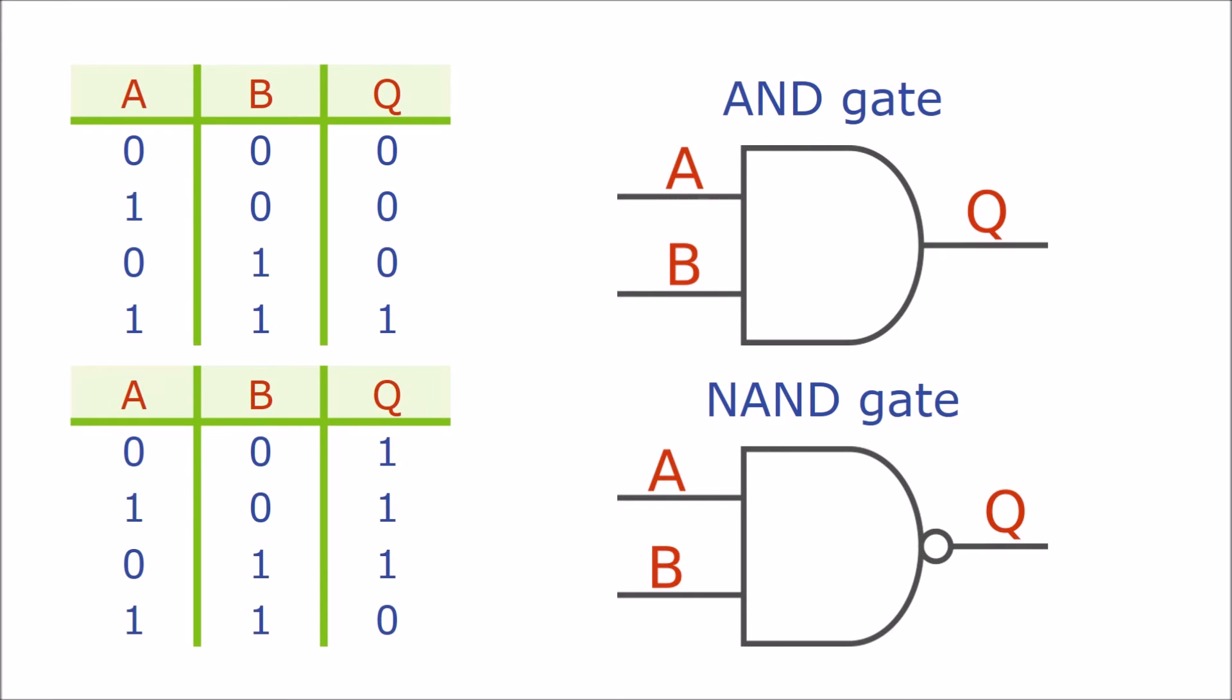The output for zero and zero is one instead of zero. For inputs one and zero it gives one. For one and one it gives zero whereas the AND gate would give one.